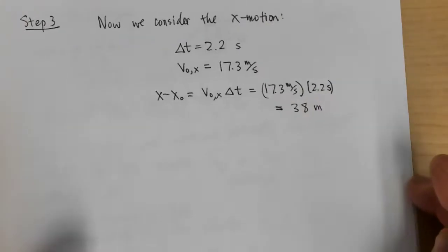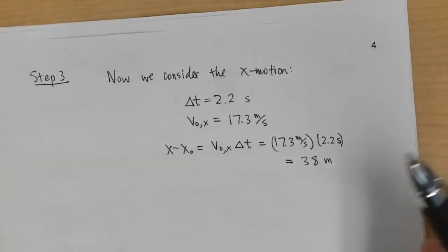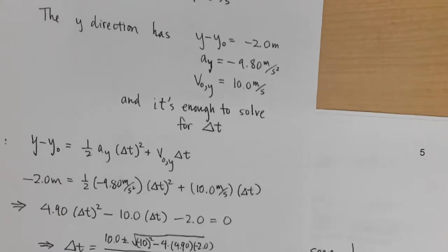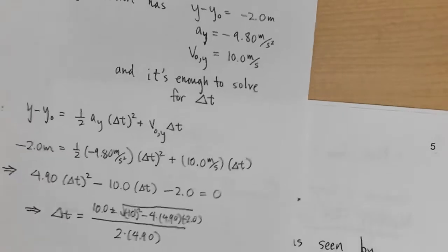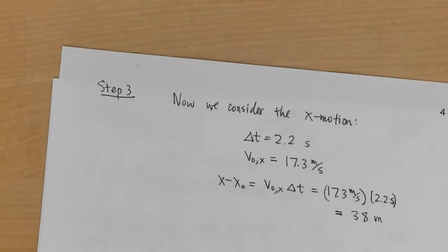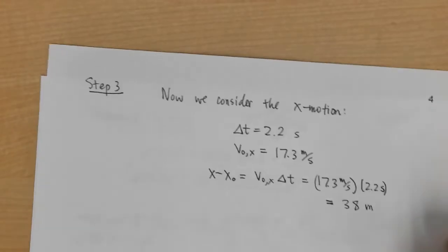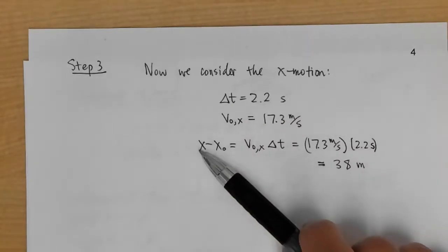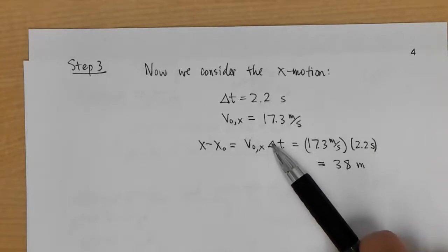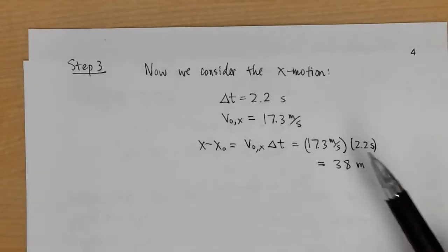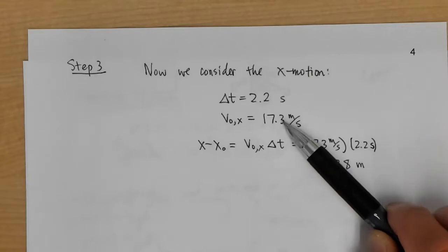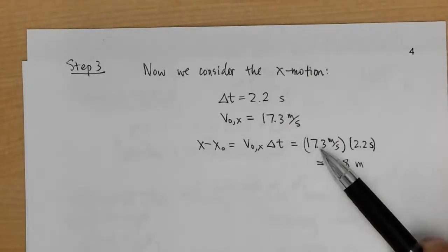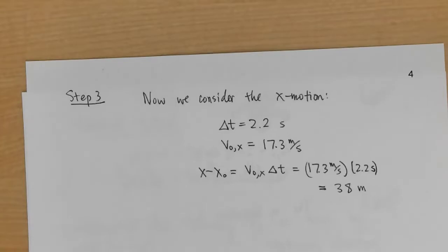Now to find how far the baseball goes in the x direction: we know Δt = 2.2 s and v₀x = 17.3 m/s. So x − x₀ = v₀x·Δt = 17.3 × 2.2 = 38 meters.